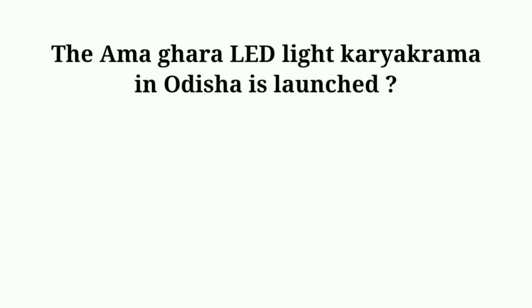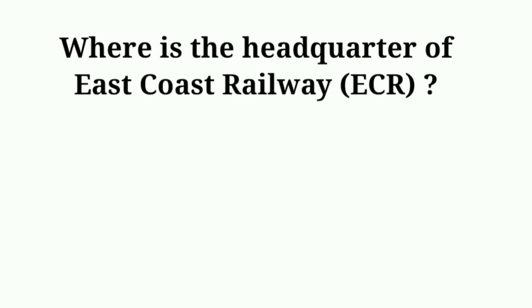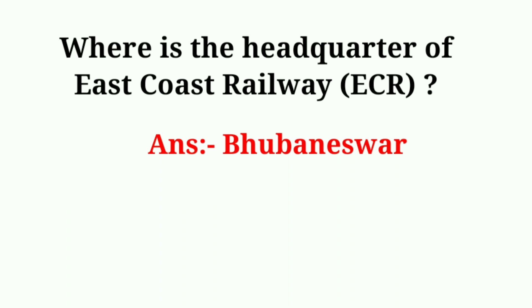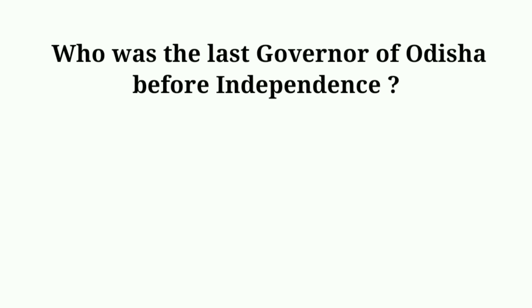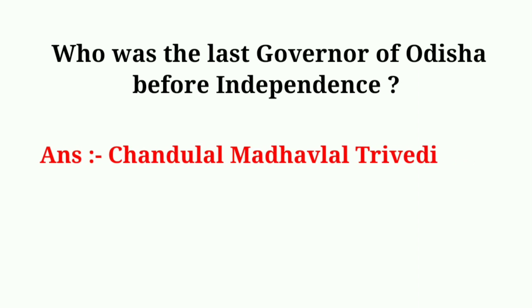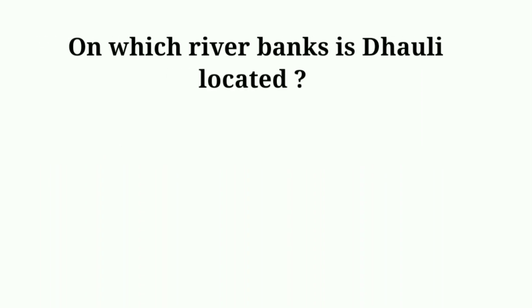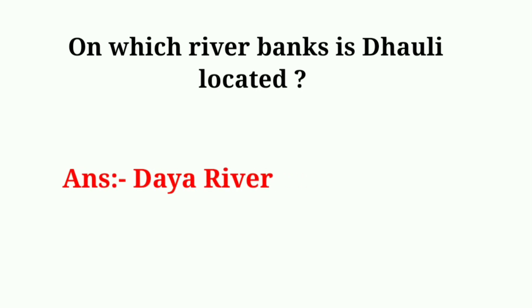The Ama Ghare LED Light scheme in Odisha was launched in? Answer: 2018. Where is the headquarter of East Coast Railway? Answer: Bhubaneswar. Who was the last governor of Odisha before independence? Answer: Chandulal Madhavlal Trivedi. On which river bank is Dhauli located? Answer: Daya river.